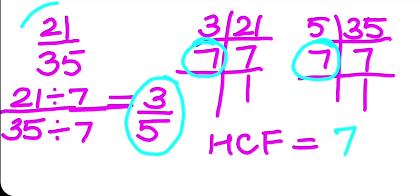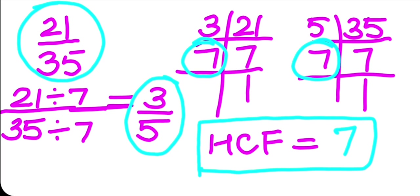So 3 upon 5 is the simplest form of 21 upon 35. So there are two steps only. First, we have to find the HCF of the given numbers. Then we have to divide the given fraction with the HCF. Then I can get the answer as the simplest form.